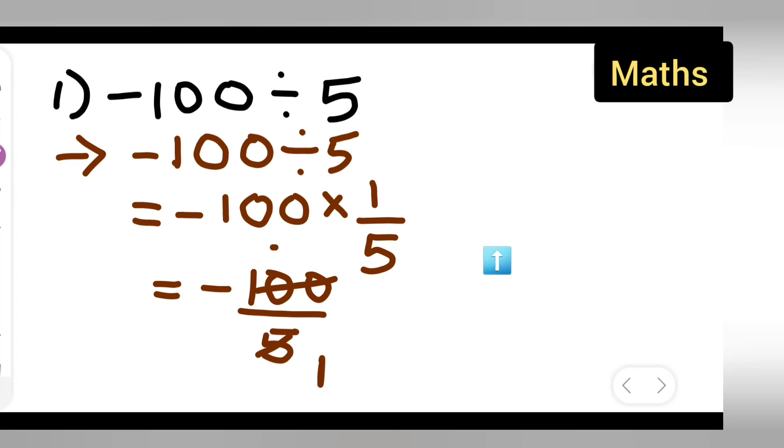5 zeros are 0, so basically your answer is going to be minus 20. So I hope you have understood how to divide minus 100 divided by 5. Thanks for watching.